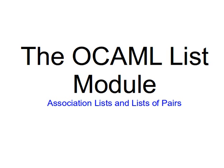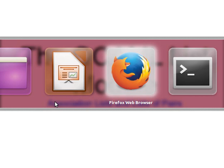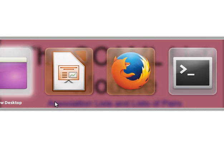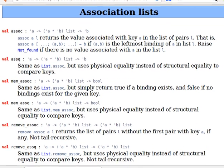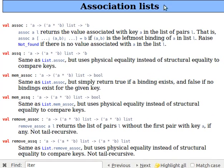Hello again, we're still covering the OCaml List module. This time we'll have a look at operations or functions for association lists and lists of pairs. Please pay attention this time because I have a very interesting sort of experiment for you, something that I'm sure you'll like.